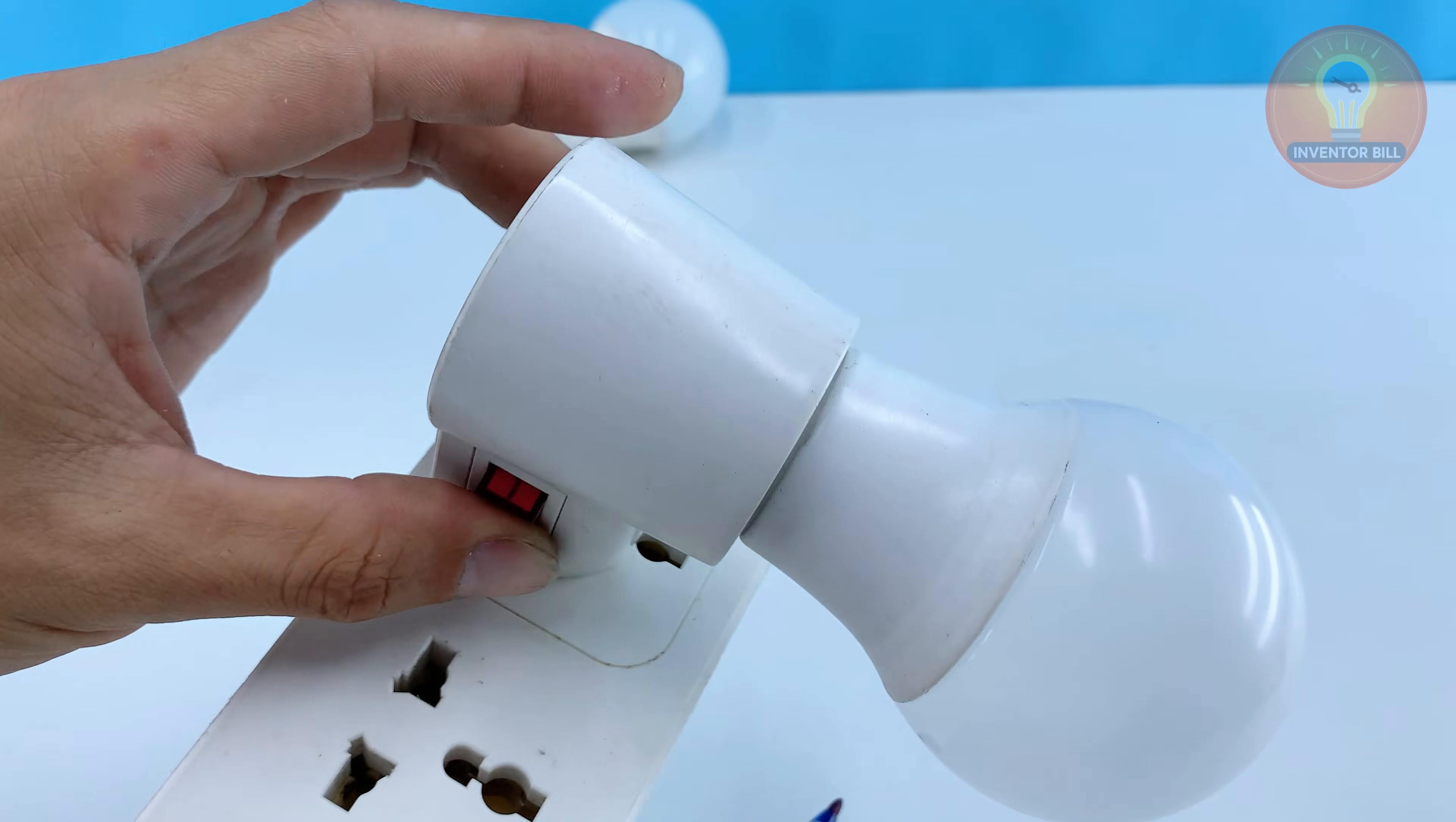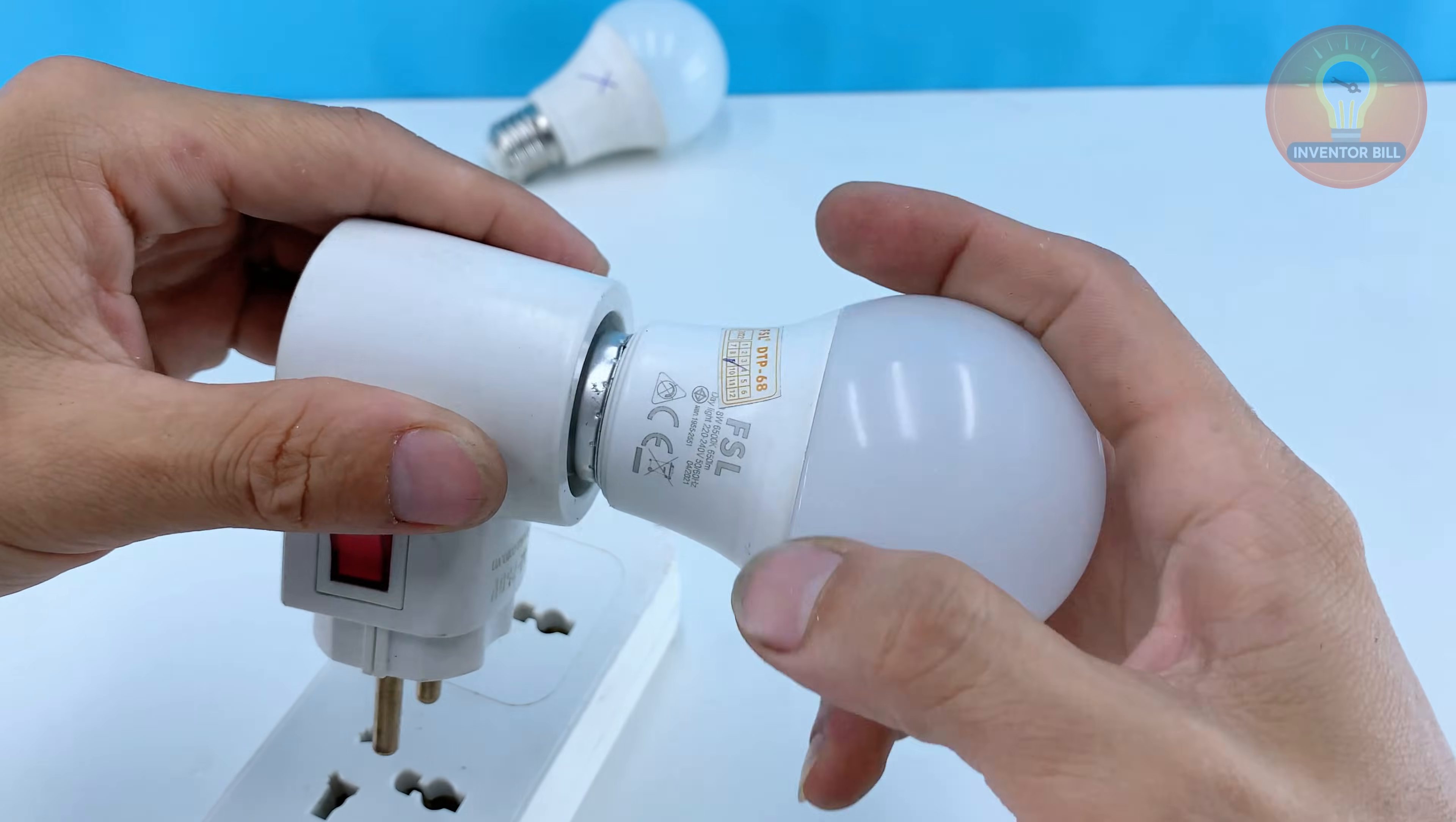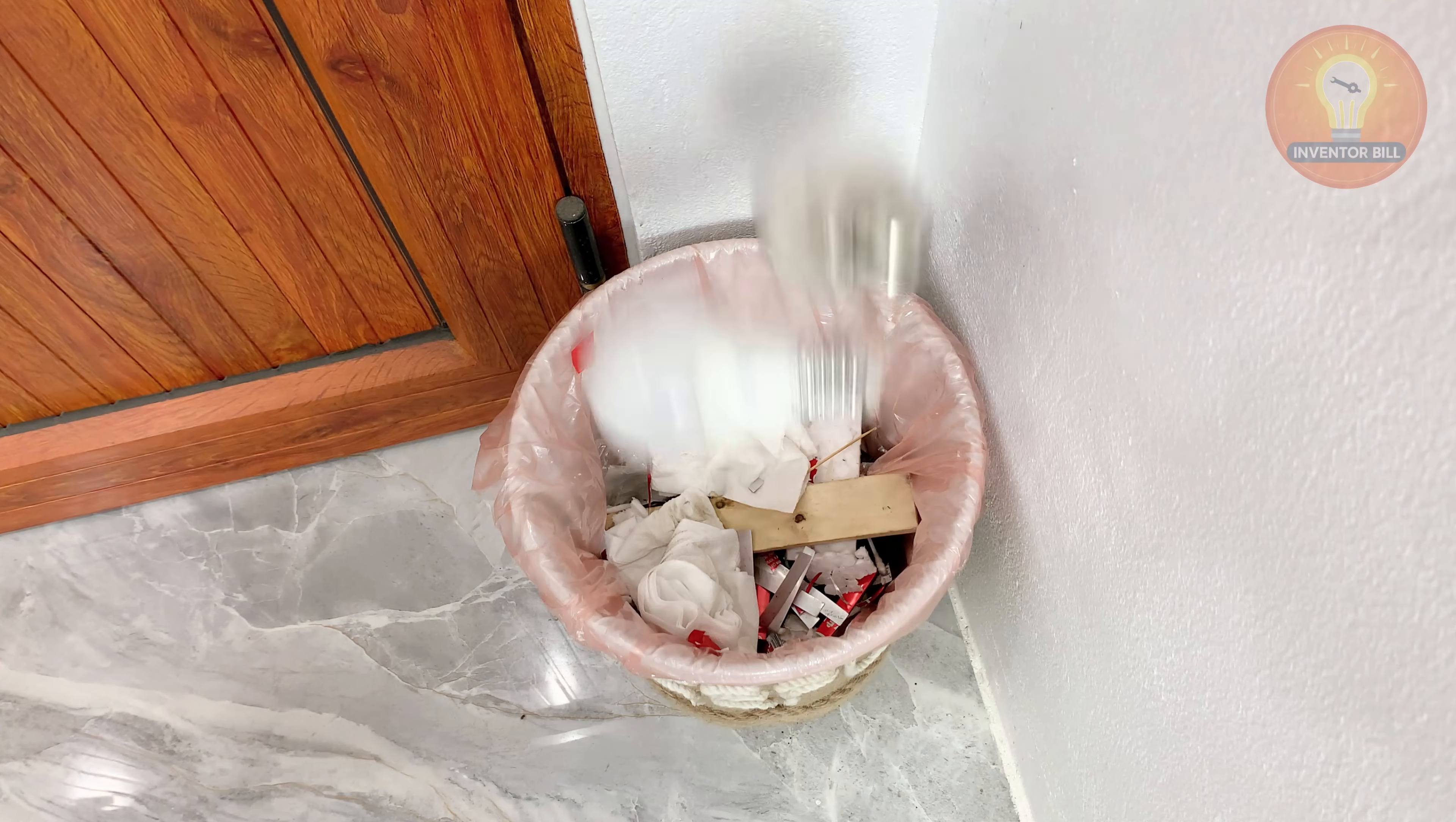Sometimes it's just one tiny chip on the board that stops working and once you know how to find it you can fix the whole bulb in a few minutes. If you enjoy saving money and repairing things with your own hands, this is a simple project you can do right at your workbench.